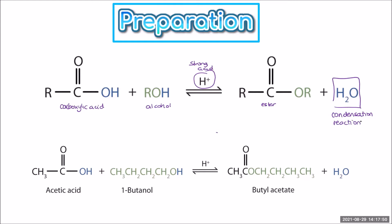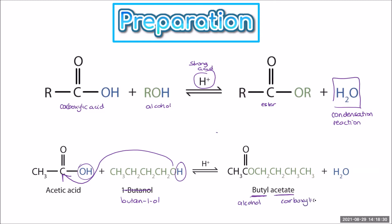Let's have a look at an example. We have acetic acid and butan-1-ol. I do not like it when people say 1-butanol — it's butan-1-ol. You will see that in literature, but let's stick with the IUPAC way. The oxygen from the alcohol comes and joins onto the carbonyl carbon of the acid, and we eliminate water, and we end up with butyl acetate. Notice the first part of the name is from the alcohol, and the second part is from the carboxylic acid. Check out my video on naming esters if you need more examples.